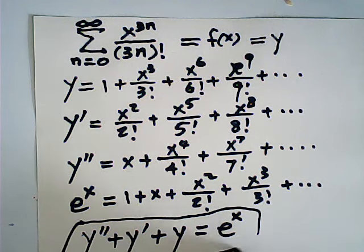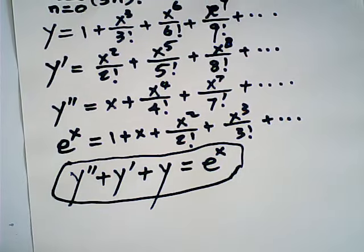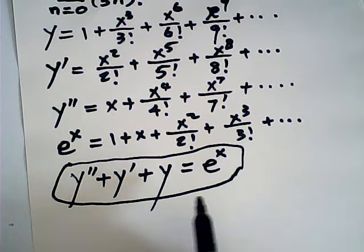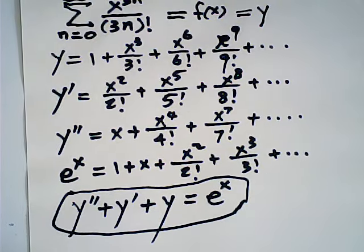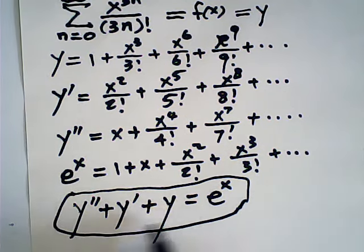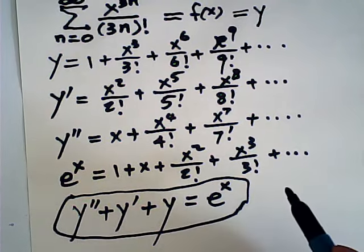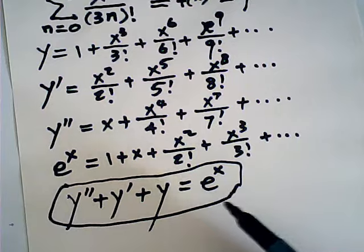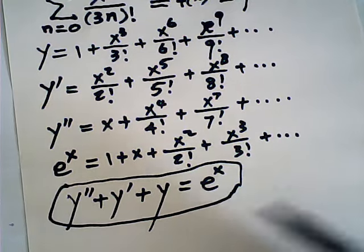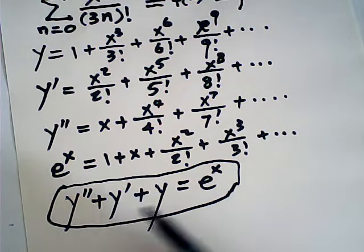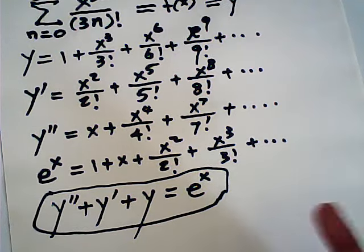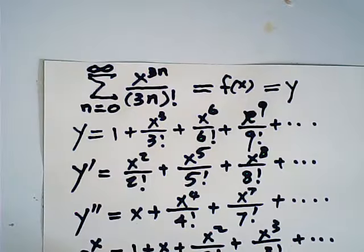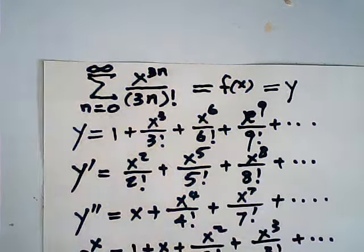That gives us a wonderful conclusion: to find y, we just solve this differential equation. That is fantastic! You know how to solve this second-order differential equation. First, we find the general solution from the homogeneous equation. Then we find a particular solution. Then we combine them to find y.